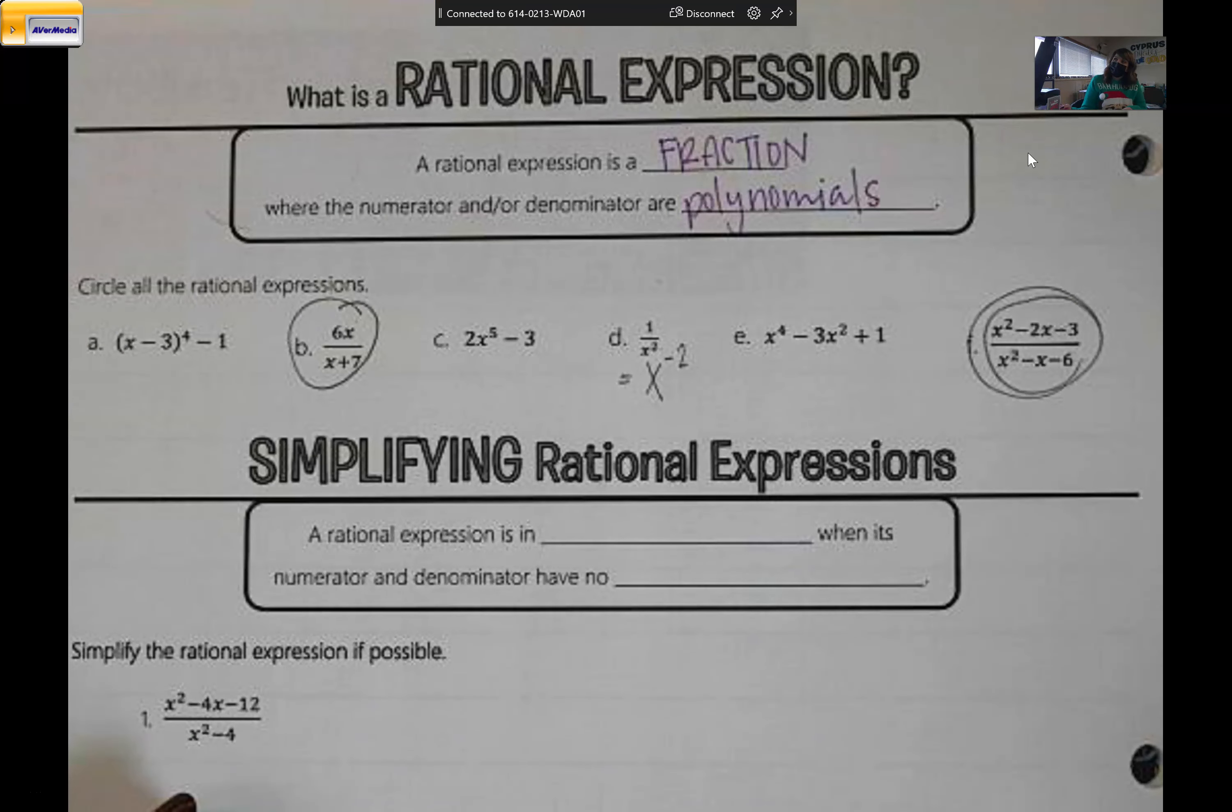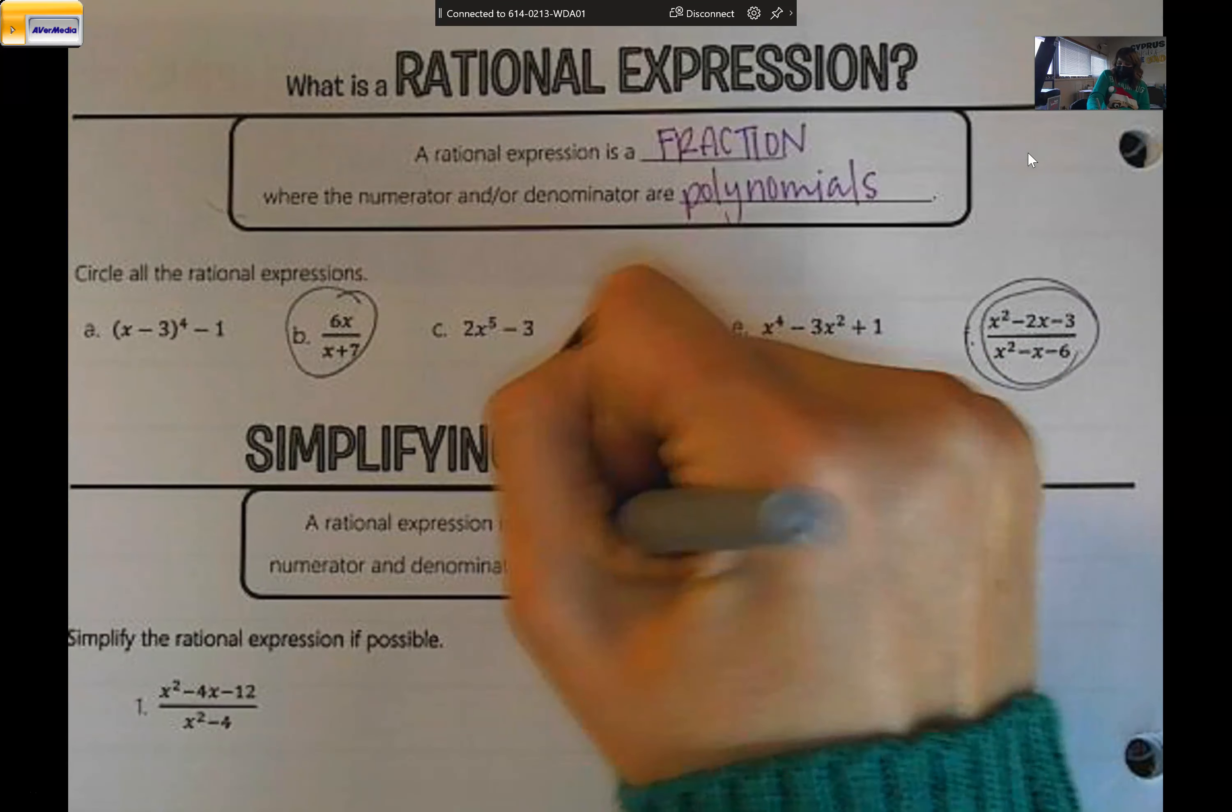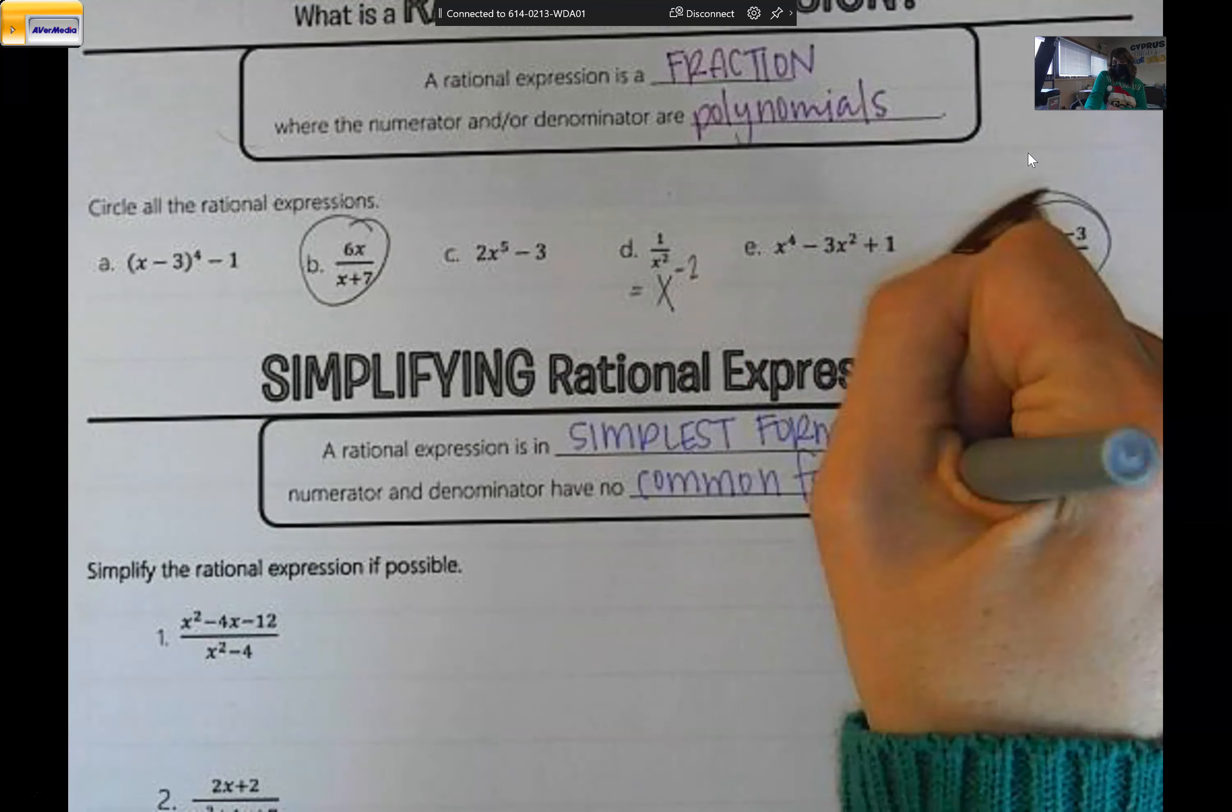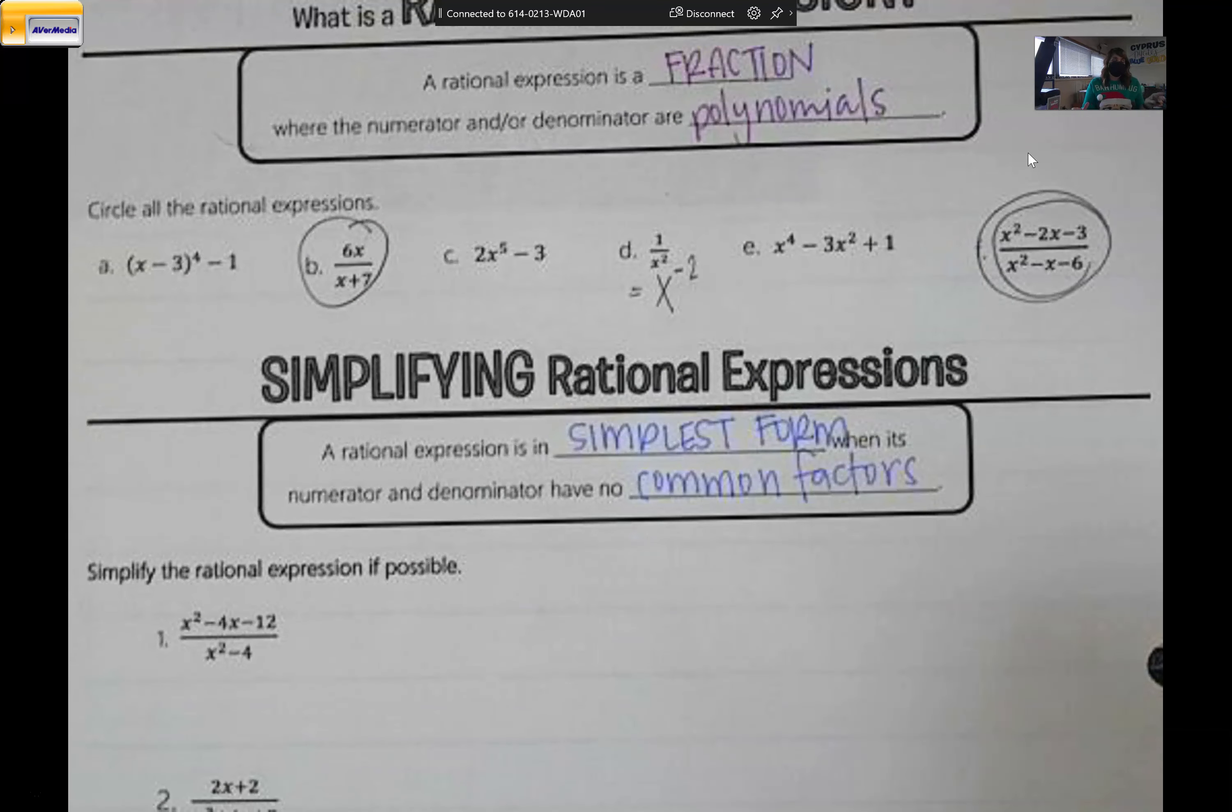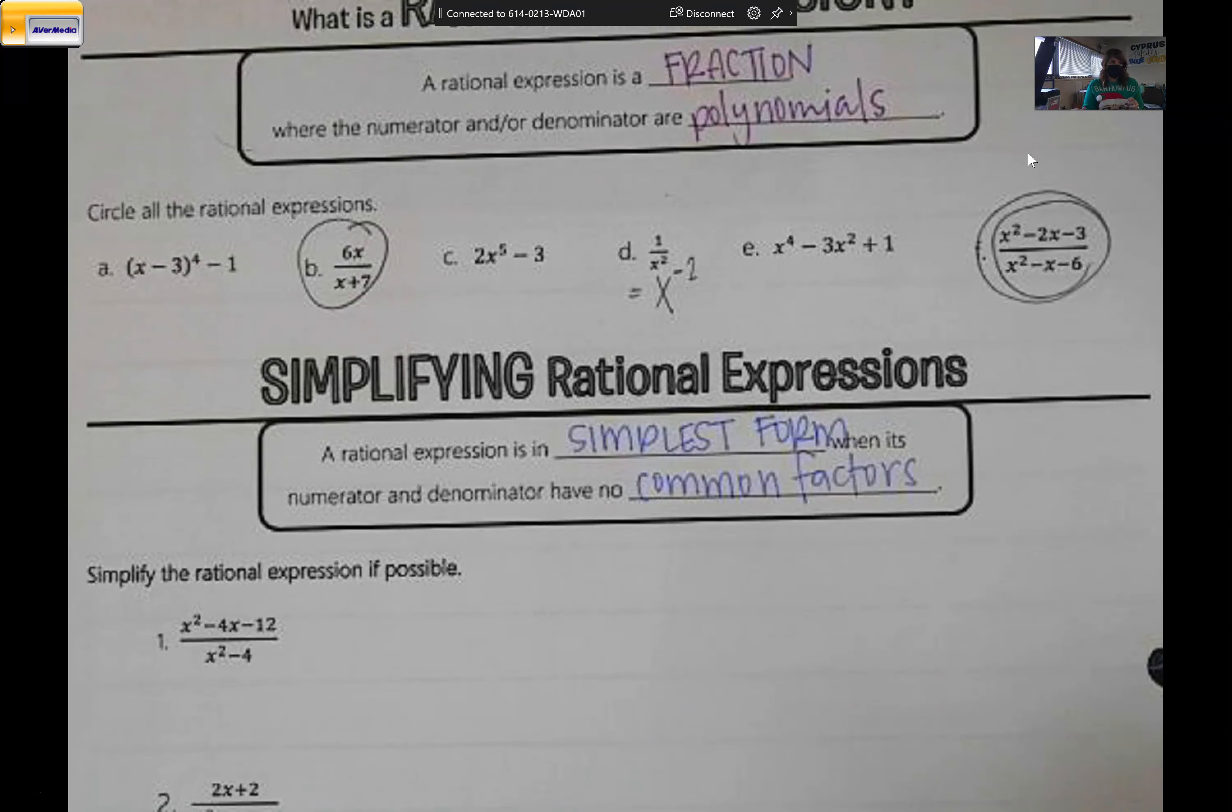So to simplify, a rational expression is in simplest form when its numerator and denominator have no common factors. Which sounds horrible, but I promise you it's not. The bad news is that to simplify, we have to factor. The good news is after that it's super easy, and I'll teach you a shortcut if you struggle with factoring.